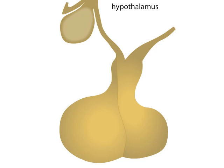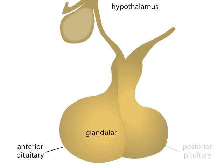The pituitary gland consists of two distinctly different parts. One part, the anterior pituitary, originates from glandular tissue. The other part, the posterior pituitary, consists of neural tissue and is essentially an extension of the brain.